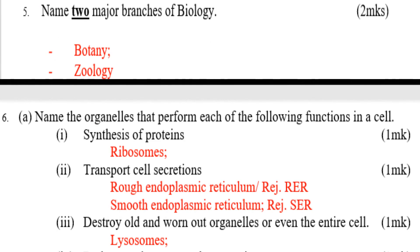Question number six: name the organelles that perform each of the following functions in a cell. Roman numeral one: synthesis of proteins — that is ribosomes. Roman numeral two: transport of cell secretions — that is rough endoplasmic reticulum and smooth endoplasmic reticulum.